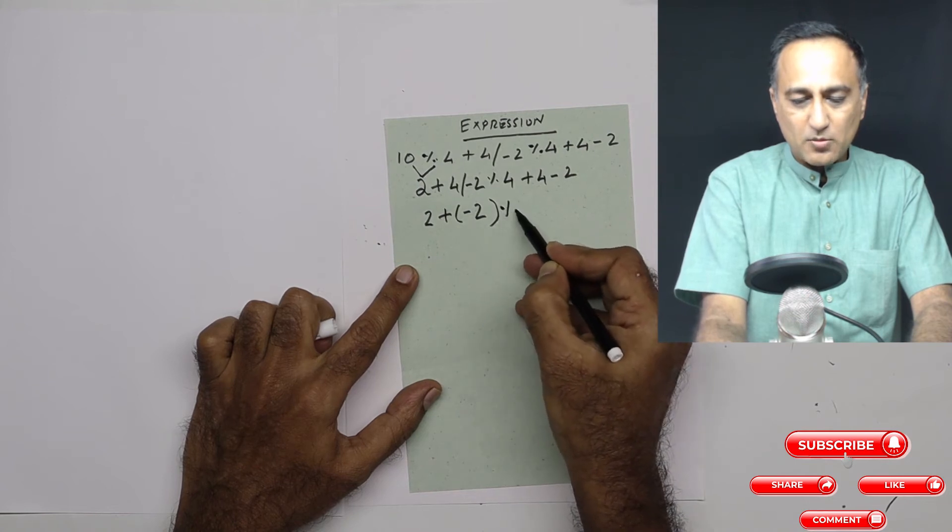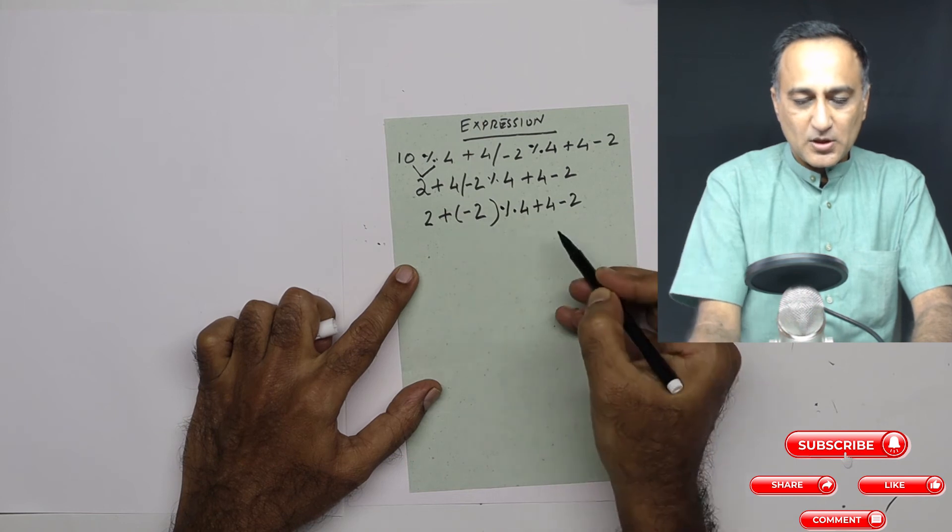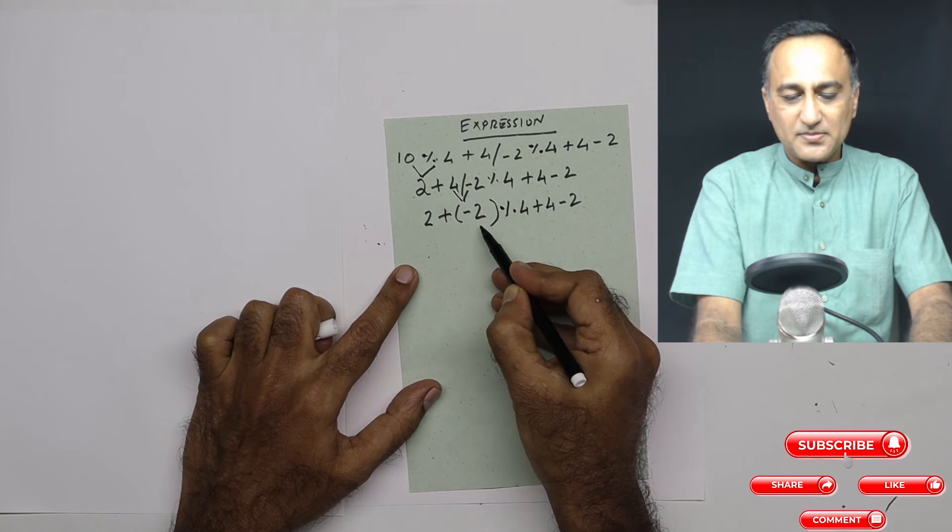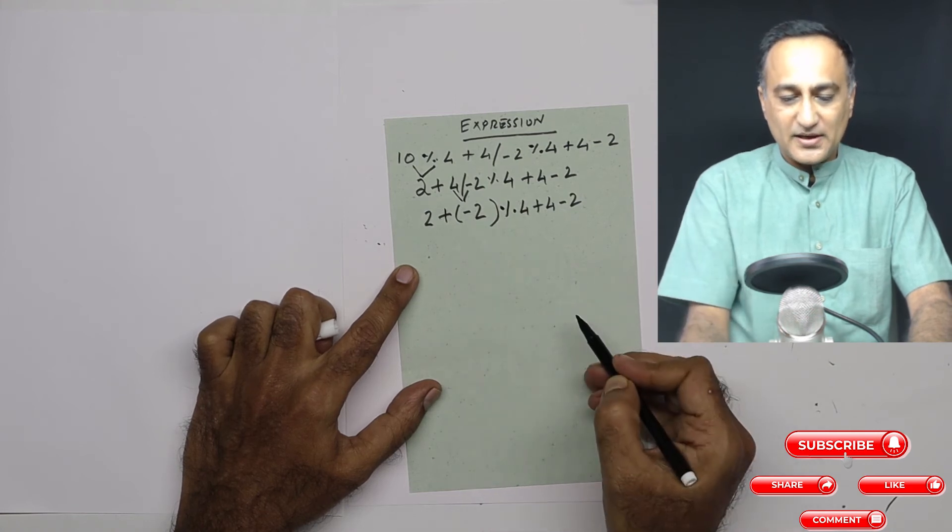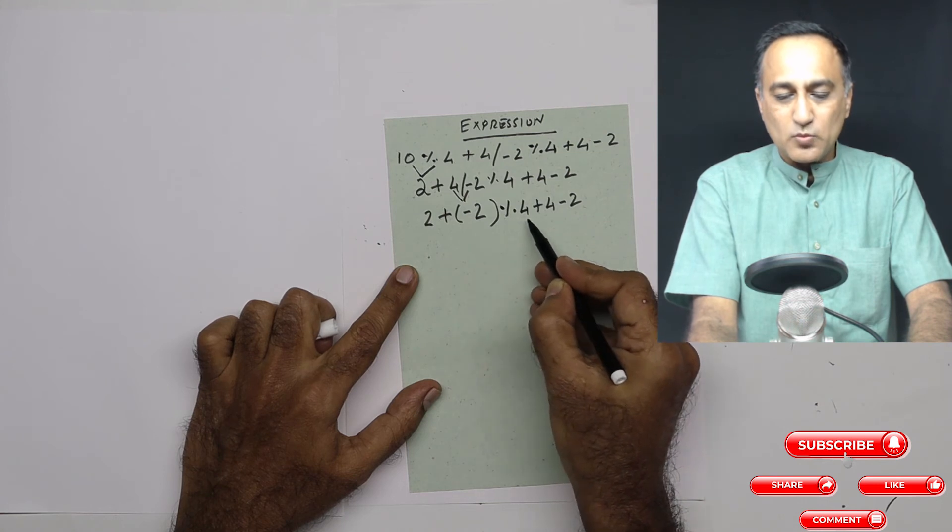This is going to be mod 4 plus 4 minus 2. So what has happened here is we're getting the result of the division. Now again, you look at it, this is a mod operator: minus 2 mod 4.